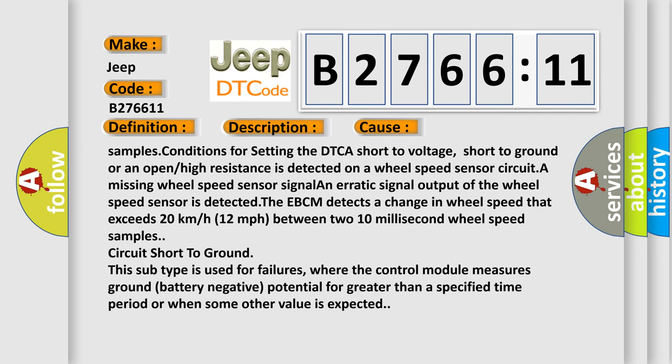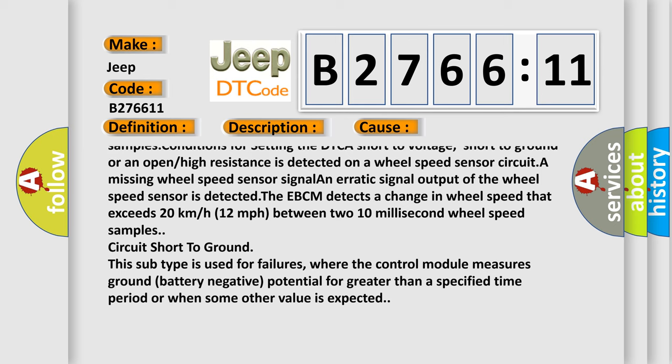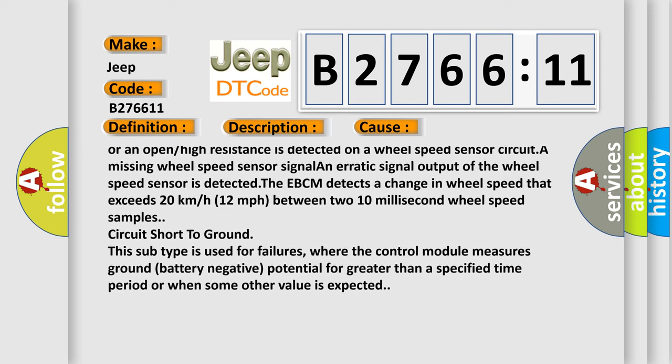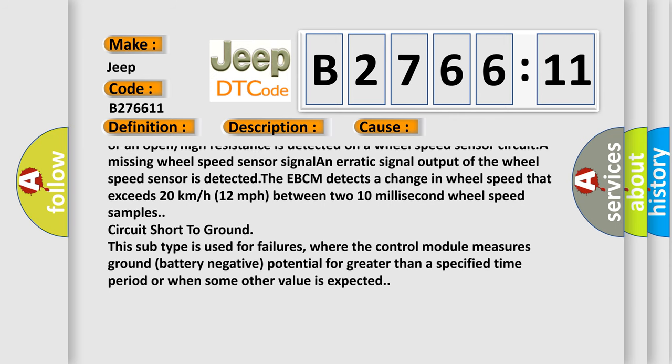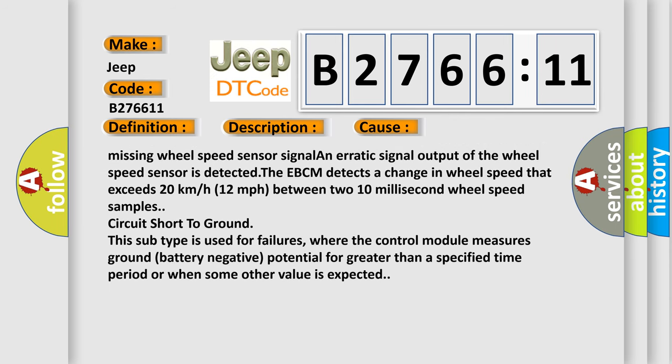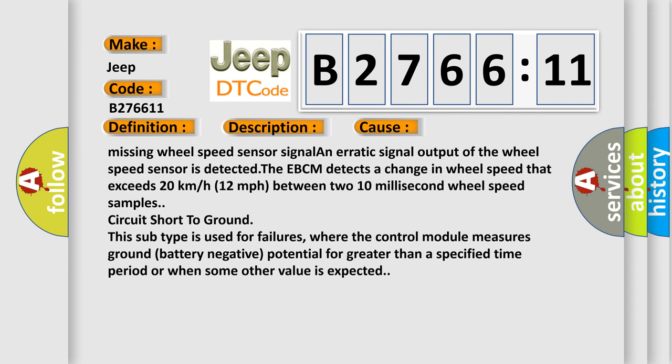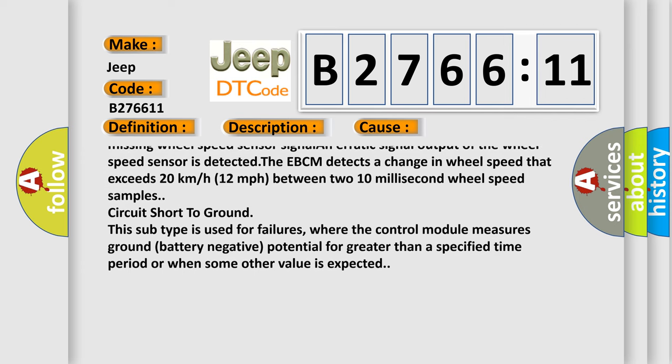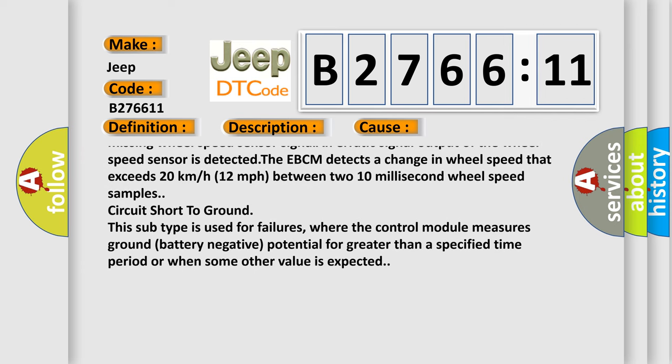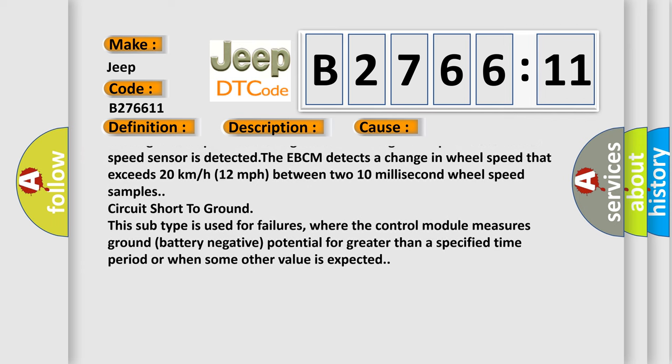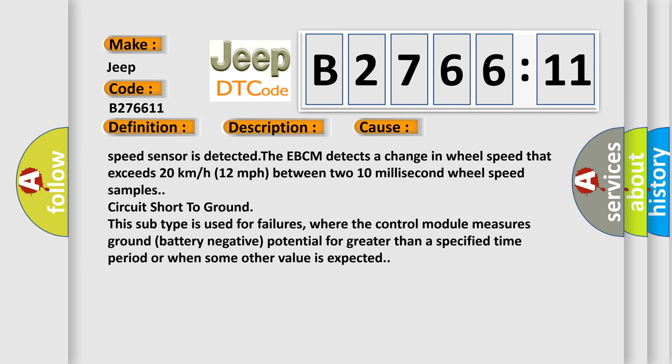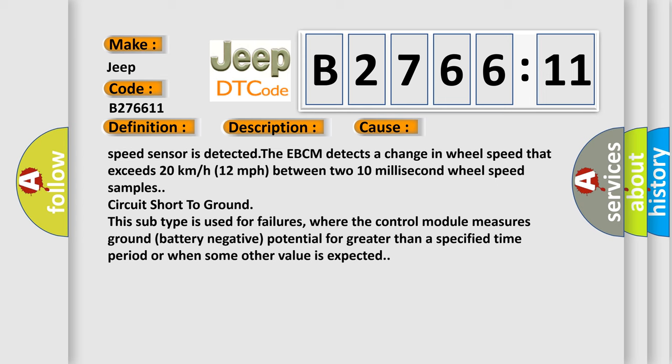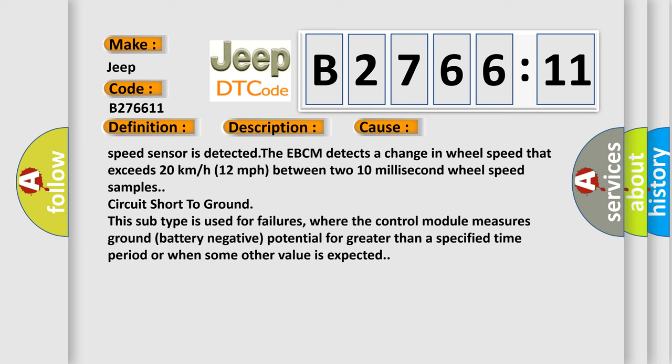The EBCM detects a change in wheel speed that exceeds 20 kilometers or 12 miles per hour between two 10 millisecond wheel speed samples. Conditions for setting the DTC: a short to voltage, short to ground, or an open or high resistance is detected on a wheel speed sensor circuit. A missing wheel speed sensor signal and erratic signal output of the wheel speed sensor is detected. The EBCM detects a change in wheel speed that exceeds 20 kilometers or 12 miles per hour between two 10 millisecond wheel speed samples. Circuit short to ground.